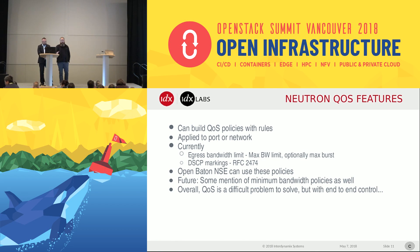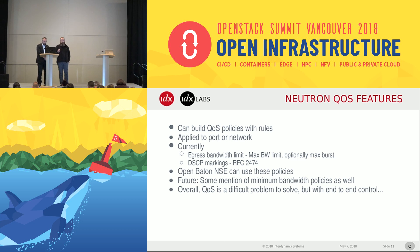Neutron has a couple of ways to apply quality of service: maximum bandwidth and DSCP markings. The demo we're going to do uses OpenBaton — specifically OpenBaton's network slicing engine — which can apply Neutron quality of service policies when a VNF is deployed.